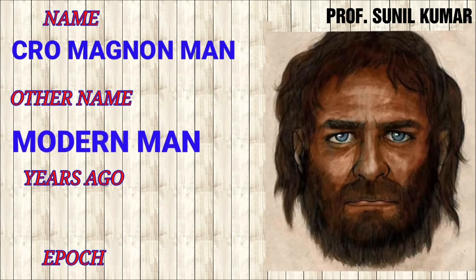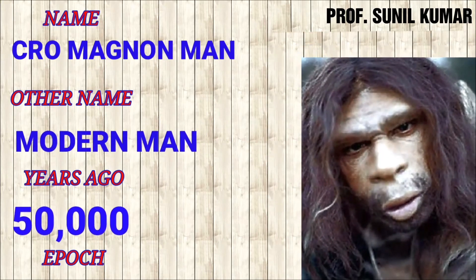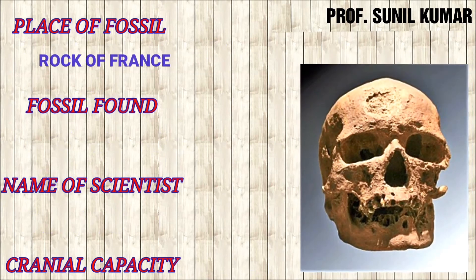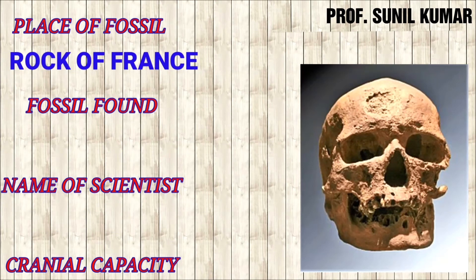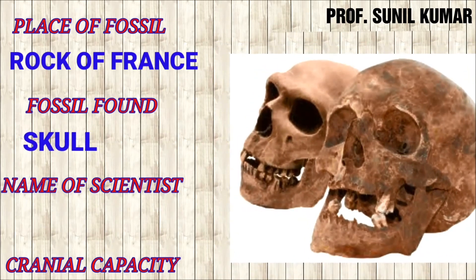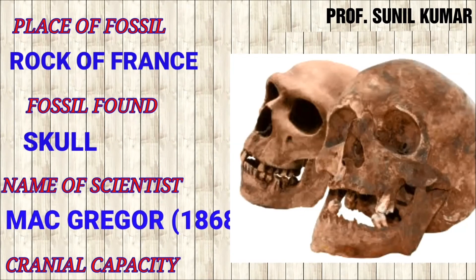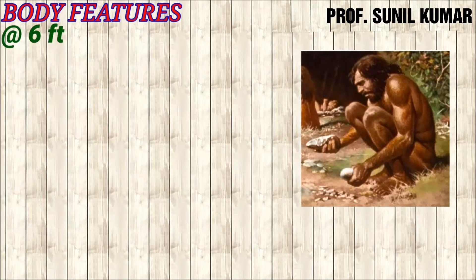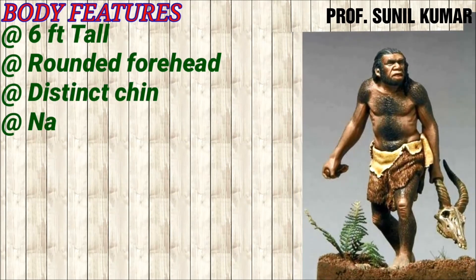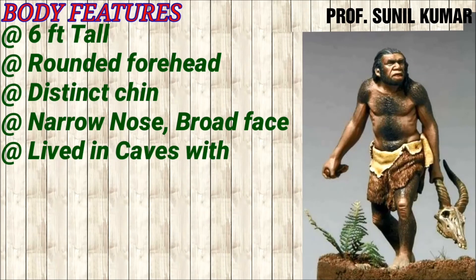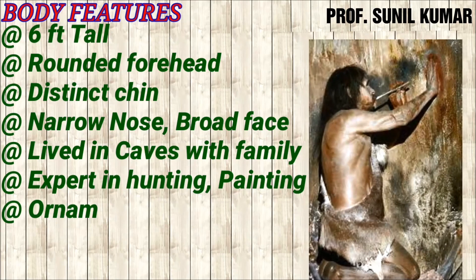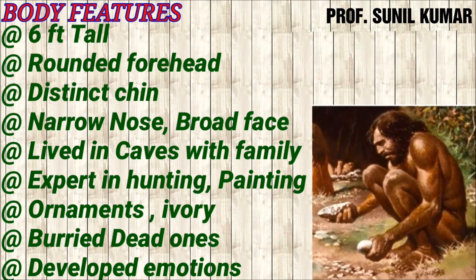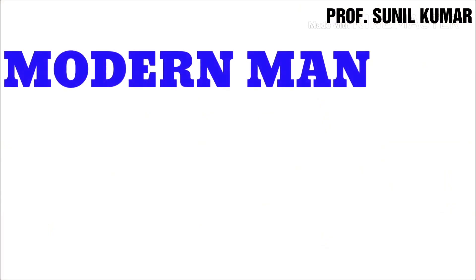The last stage before modern man is Cro-Magnon man, who lived around 50,000 years ago in the Holocene epoch. This Cro-Magnon man was more intelligent than modern man — Homo sapiens sapiens. The fossil was found in the rocks of France, and the fossil obtained was a skull. The scientist McGregor in 1868 discovered the fossil. Cranial capacity was 1600 cc. They were six feet tall, had a rounded forehead, distinct chin, narrow nose, and broad face. They lived in caves with families, were expert hunters and painters, made ornaments from ivory, buried their dead, and developed emotions and attachment toward loved ones.